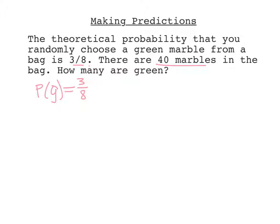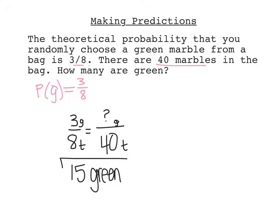We'll use our theoretical probability to make a prediction here. So we figured out or we're told that three out of every eight marbles are green, and we want to know how many green there would be out of 40 marbles. And so you might find it helpful like I do. I like to put a little label on top, three green out of eight total. And then we're looking for how many green out of 40 total. So now I can just cross multiply. I have three times 40 divided by eight. And I find out that there are going to be 15 green marbles out of those 40.